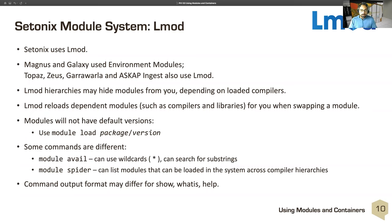Some commands are different. Module avail can use wildcards — it could not on Magnus and Galaxy with environment modules — so you can provide substrings. Module spider can find modules across compiler hierarchies that cannot currently be loaded. Module avail is limited to things you can actually load given what's already loaded, while module spider can see modules that exist but cannot be loaded due to unmet dependencies or different hierarchy positions. Command output format will differ slightly for show, whatis, and help, but these are minor formatting changes.